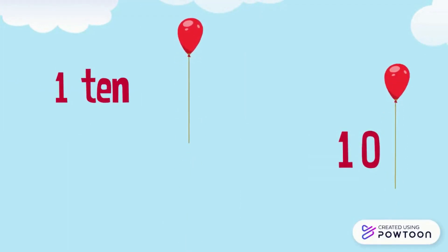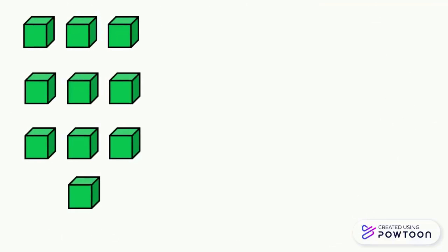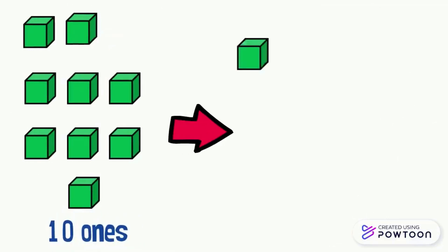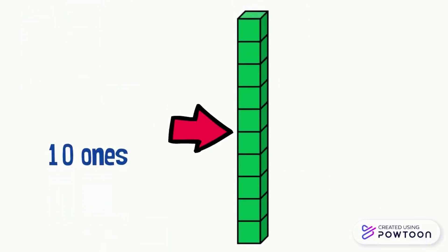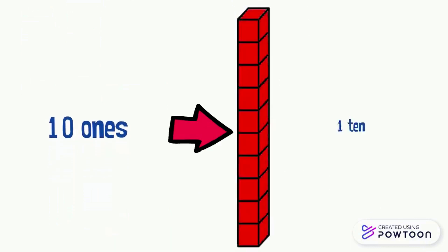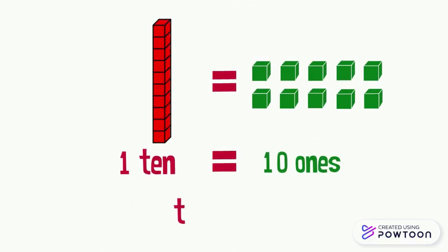A group of ten balloons is ten balloons. A group of ten chocolates is ten chocolates. Here there are ten cubes, which means ten ones. We want to put these cubes on top of each other — then we will get a block called one ten. So one ten equals ten ones. We can write the letter T instead of the word 'ten' and the letter O instead of the word 'one': one T equals ten O.